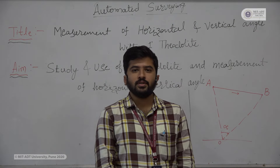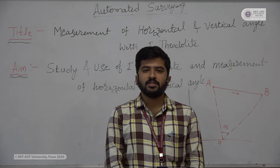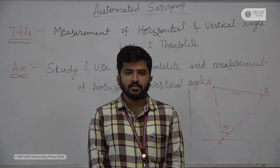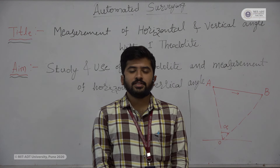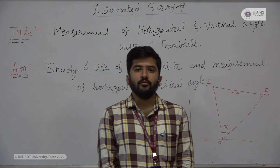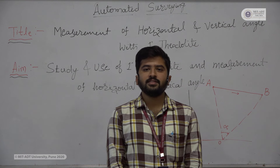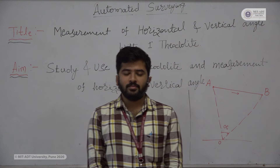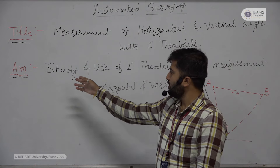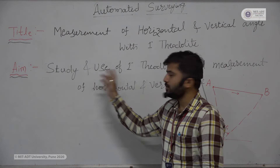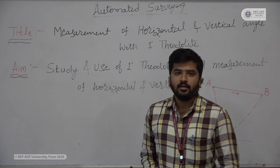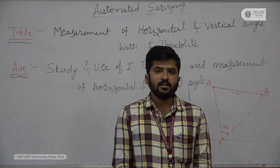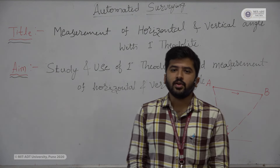We are here to study the Automated Surveying Laboratory. We'll start with the first experiment: measurement of horizontal angle and vertical angle by using the one-second theodolite. The aim of the experiment is to study and use of the one-second theodolite, and also measurement of horizontal and vertical angle with the help of the one-second theodolite.